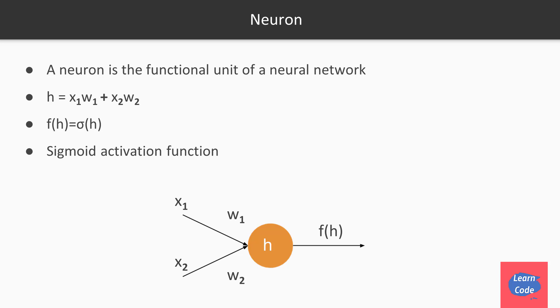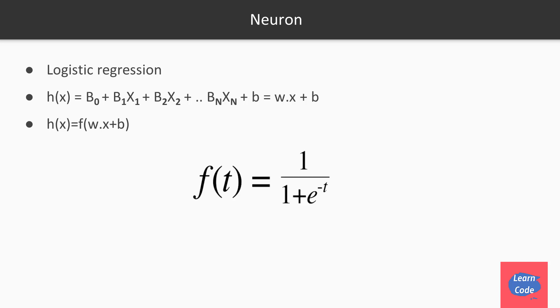By activation function, I only mean the output will have to go through the sigmoid function. You can also say that each of these neurons is performing logistic regression.